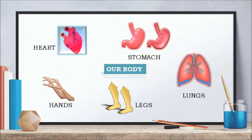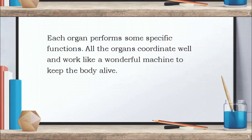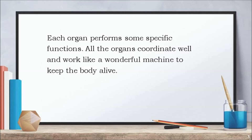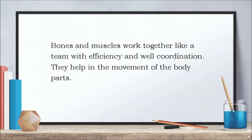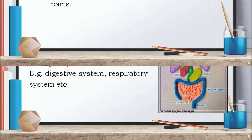Our body is made up of various organs like heart, stomach, lungs, legs, hands and many more. Each organ of our body performs some specific functions. All the organs coordinate well and work like a wonderful machine to keep the body alive. Bones and muscles work together like a team with efficiency and good coordination. They help in the movement of the body parts.